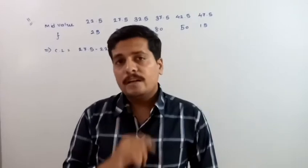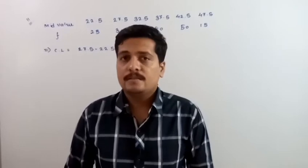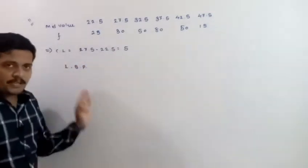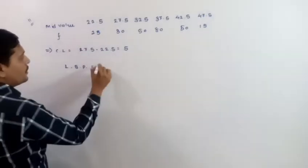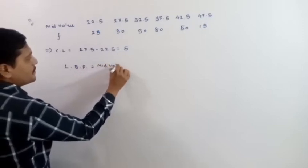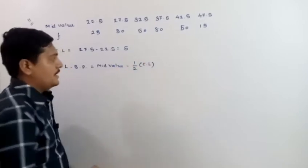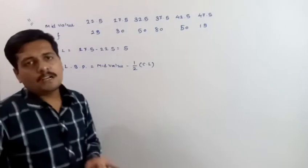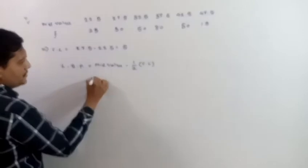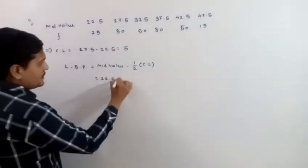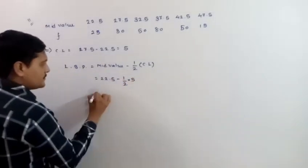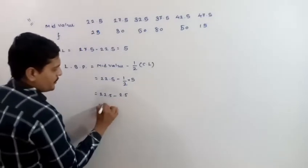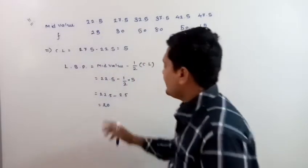Now that we have the class length, we know each class interval is 5. We can find the class boundary from the mid value. Remember: lower boundary point = mid value − (1/2) × class length. Mid value is 22.5, so lower boundary = 22.5 − (1/2 × 5) = 22.5 − 2.5 = 20. So our class starts from 20.